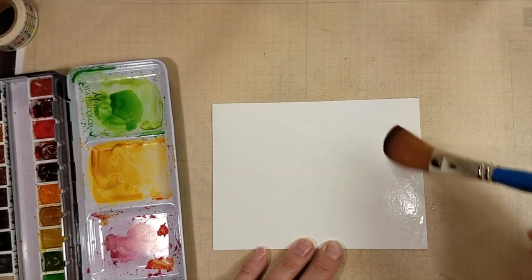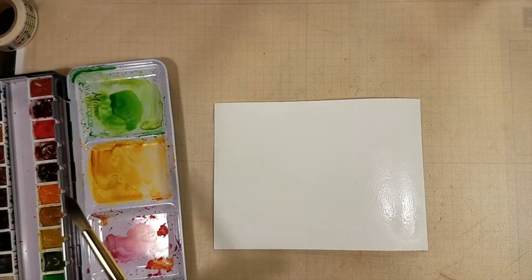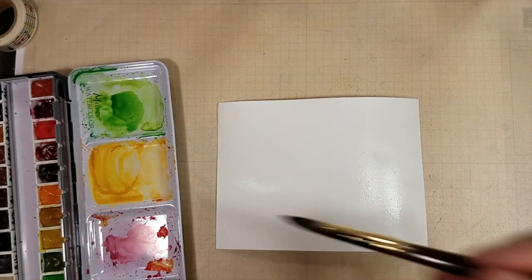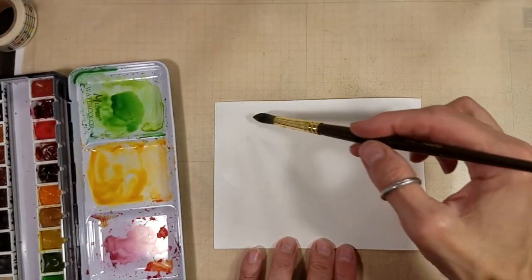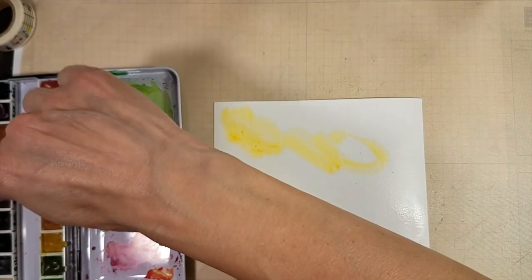I have a piece of Canson XL watercolor paper, 140 pound paper. And this is, I think this is a 4 by 4 and a half by 6 inch piece of cardstock. It was just one I pulled from my stash that had already been cut.